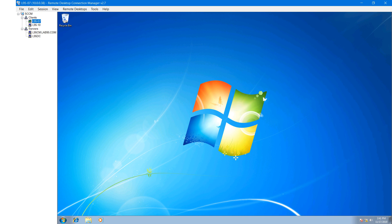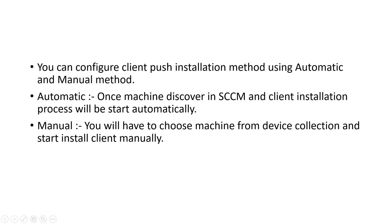In client push installation method, two methods are available — one is automatic and the other is manual. With the automatic method, when any machine is discovered by the SCCM server, you can see that machine information under the All Systems device collection. Automatically, the SCCM client agent installation process will start and the client agent will get installed automatically — you don't need to do anything manually.